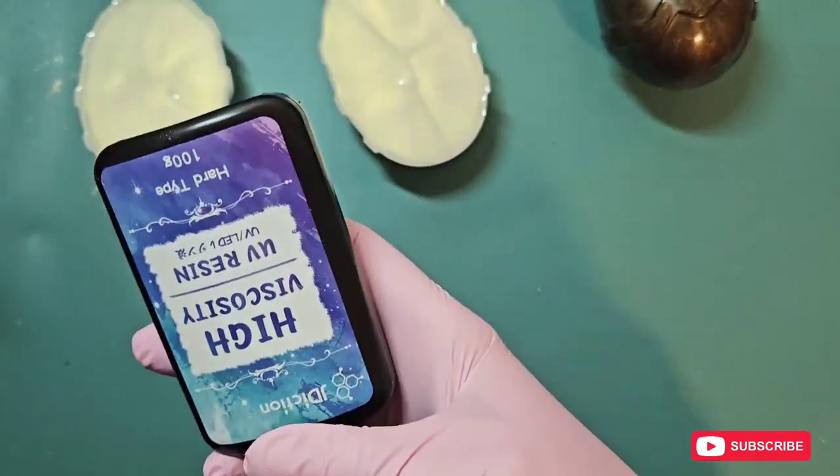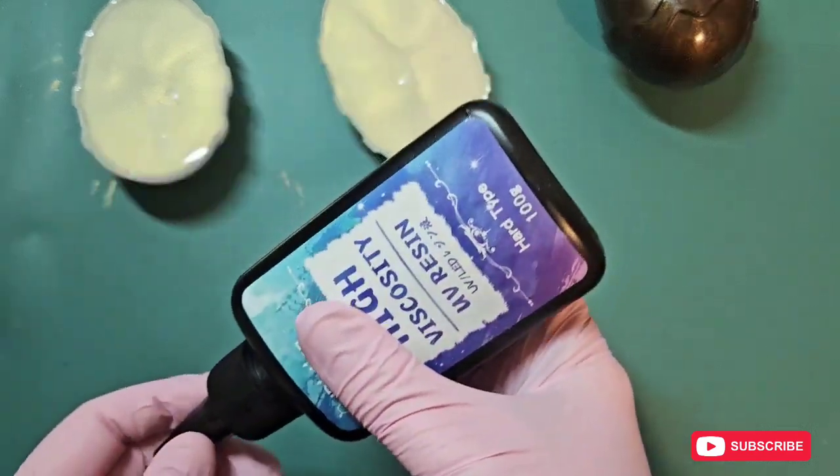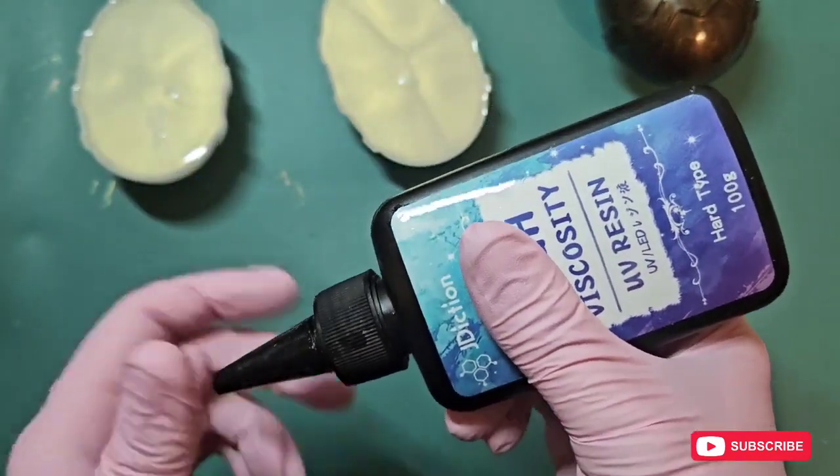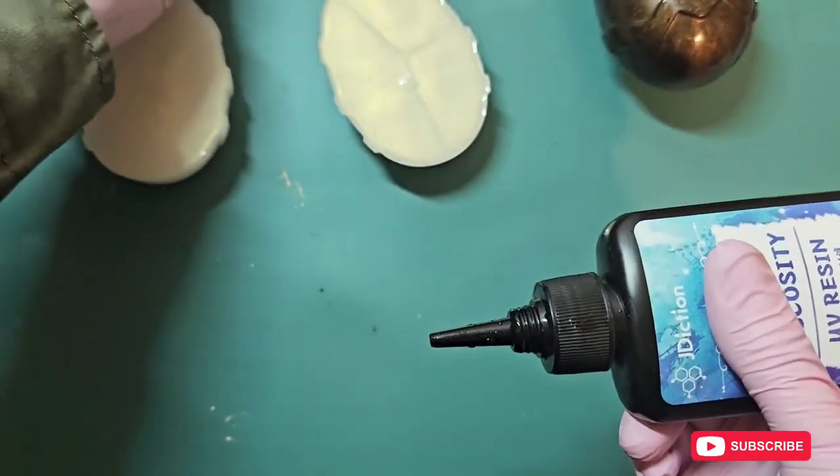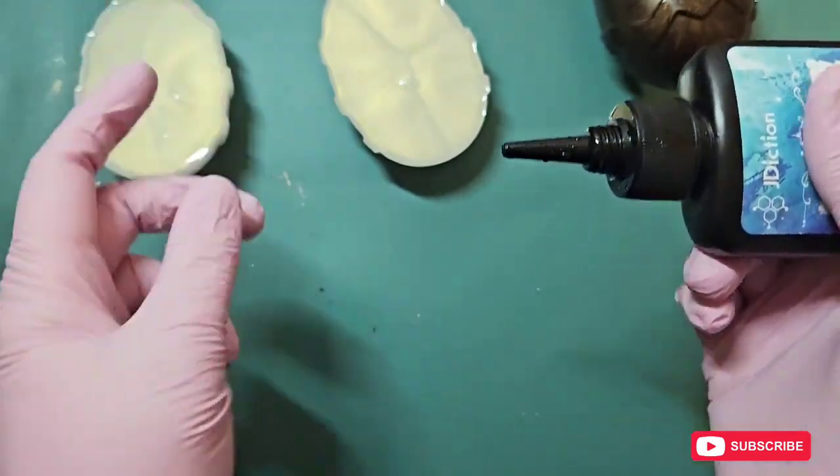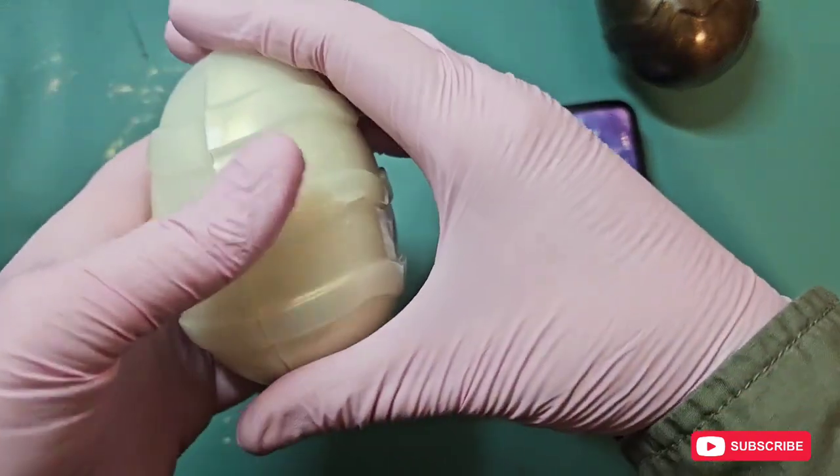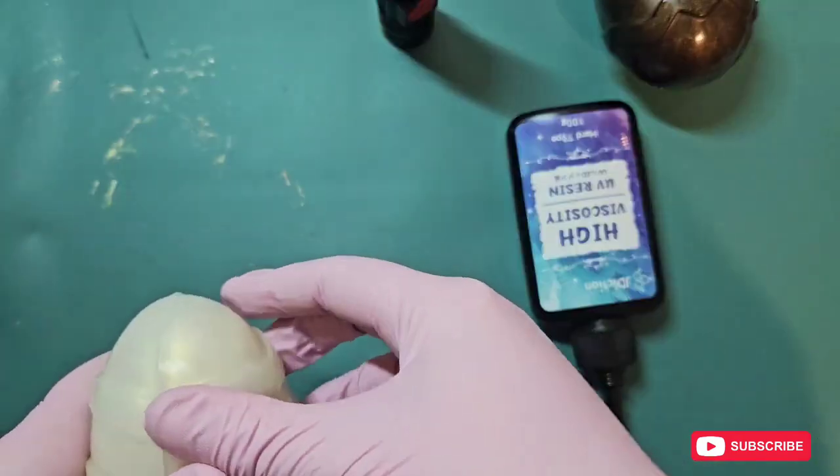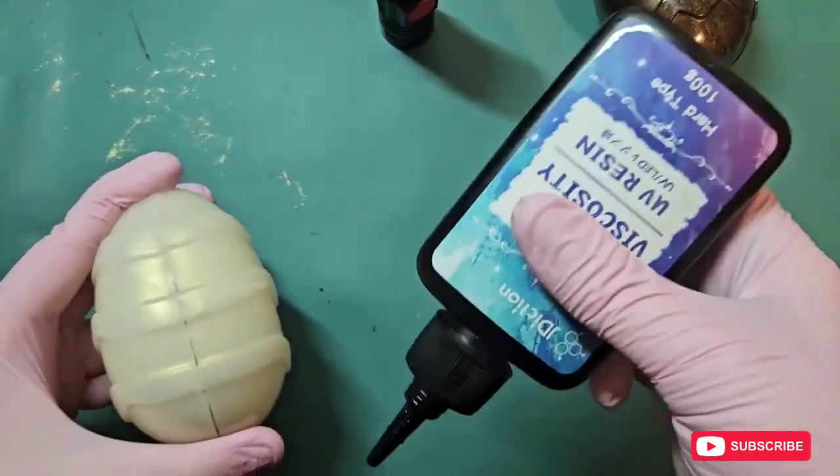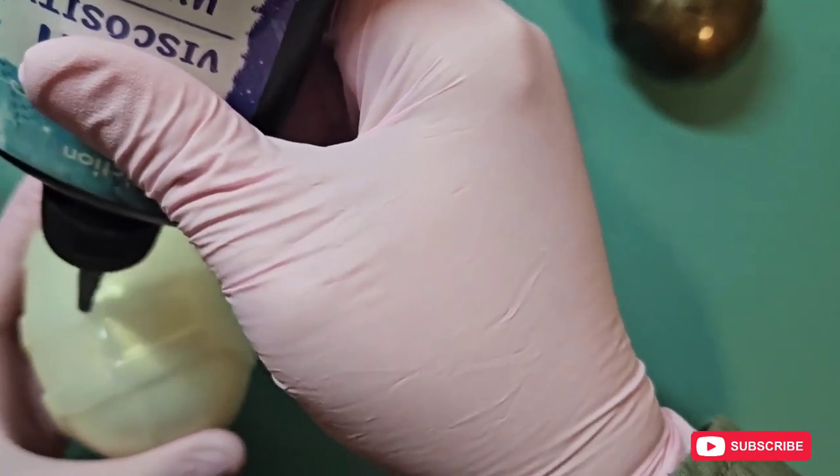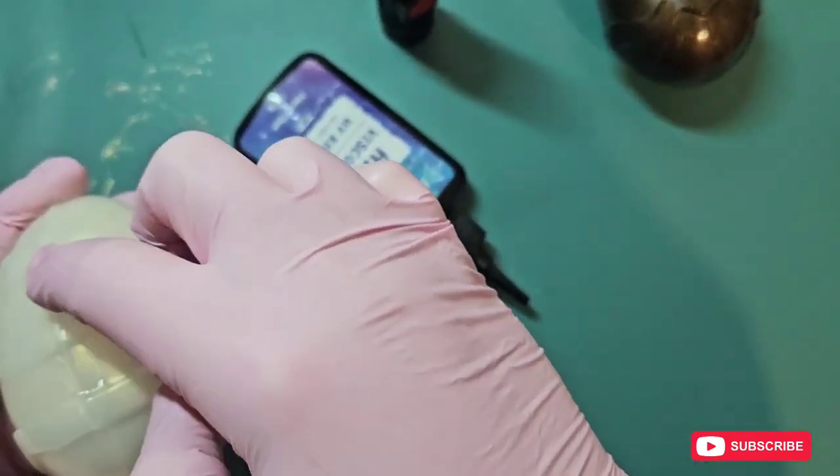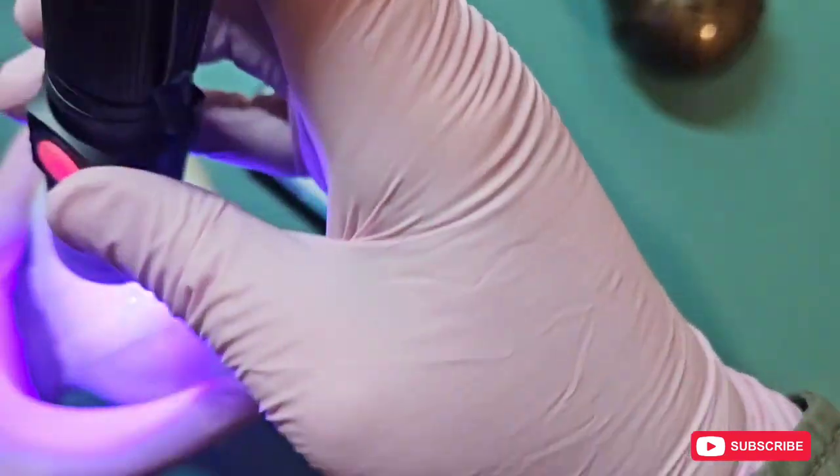I'm going to be using the J Addiction high viscosity UV resin. Viscosity, for those that don't know, means thickness of the actual resin. So a high viscosity means this is thick. You also get medium viscosity and low viscosity. Medium is medium thickness, and low viscosity means thinner, like a low thickness. What I'm going to do with these is I'm going to hold them together. I've got a UV torch. I've had this upside down for the past 20 minutes and it's still flowing. Just a thin layer. This is just basically going to hold them together.